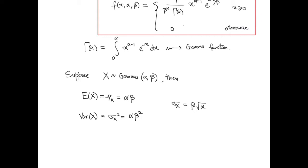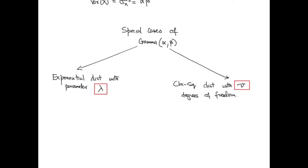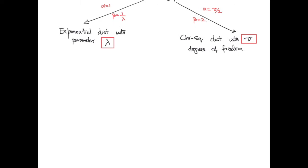The gamma distribution has two important special cases when we choose alpha and beta as particular values. The first case is the exponential distribution with parameter lambda, and the second case is the chi-square distribution with nu degrees of freedom. When alpha equals 1 and beta equals 1 over lambda, we get the exponential distribution with parameter lambda. When alpha equals nu over 2 and beta equals 2, we get the chi-square distribution with nu degrees of freedom.